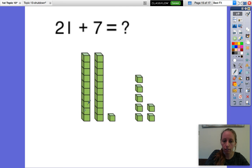So here we have 21, 10, 20, and one more. That makes 21. And then our other addend is 7. 1, 2, 3, 4, 5, 6, 7.